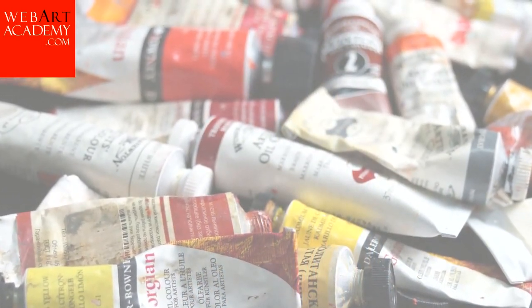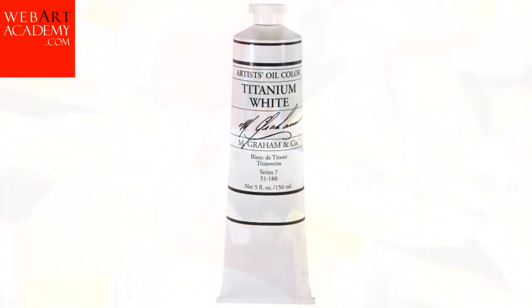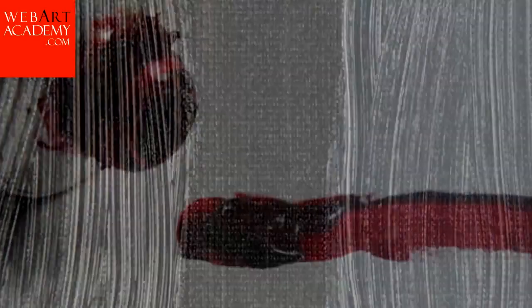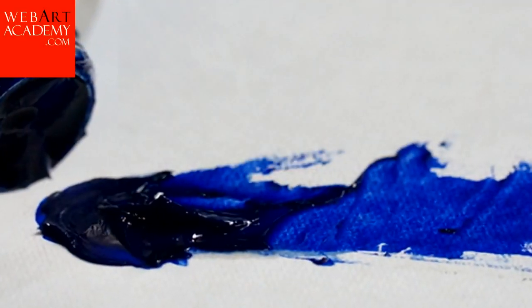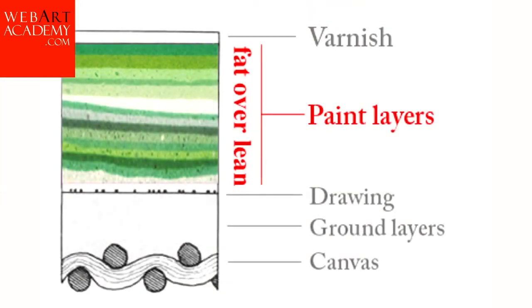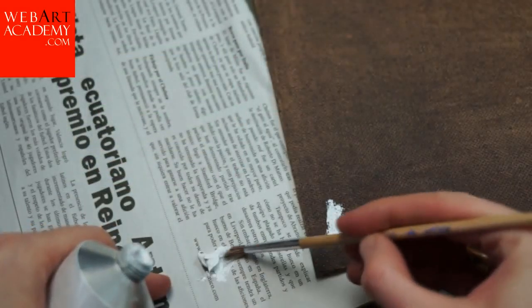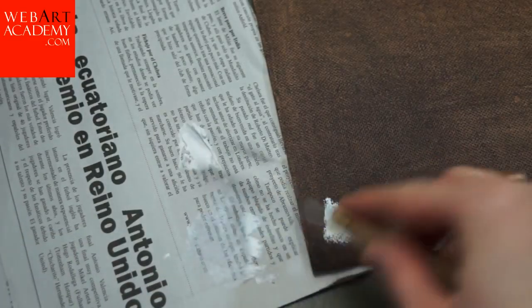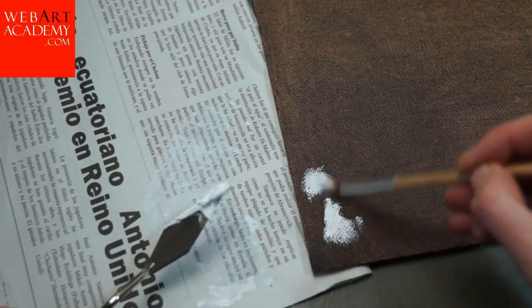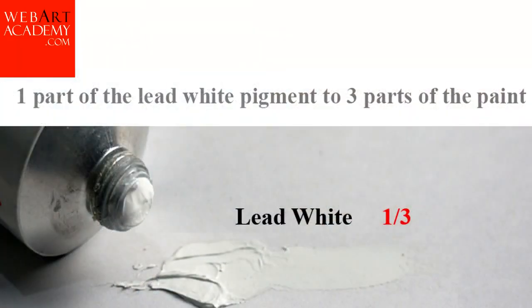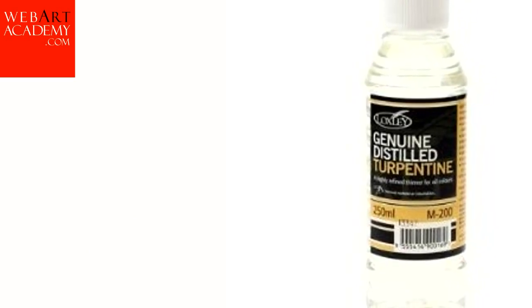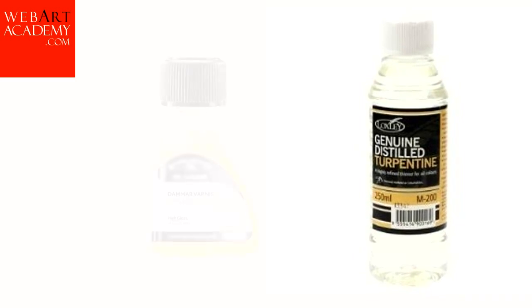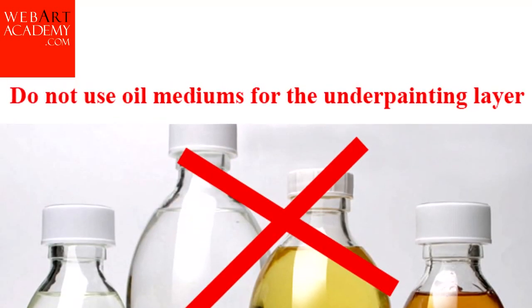Paints that dry slowly and form a soft film are not well suited for underpainting — such as Titanium White, Zinc White, Lamp Black, Craplak, Cadmium, and Ultramarine. In accordance with the main rule of oil painting — fat over lean — lower layers must contain less oil and be less elastic and more rigid than upper layers. You can reduce oil content by squeezing paint on a gypsum plate or paper. You can also add one part of lead white pigment to three parts of paint, grind it with turpentine, and dilute with turpentine or damar varnish without oil for painting. Do not use oil mediums for the underpainting layer.